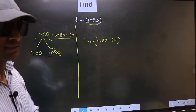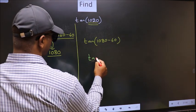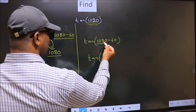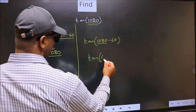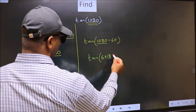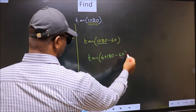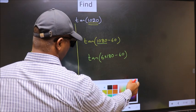Next. Tan. In place of this, now we should write 6 into 180 minus 60.